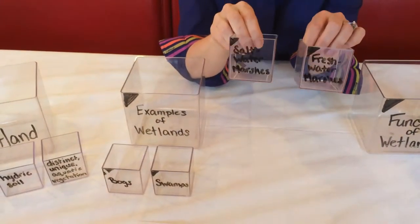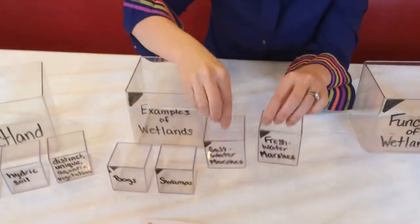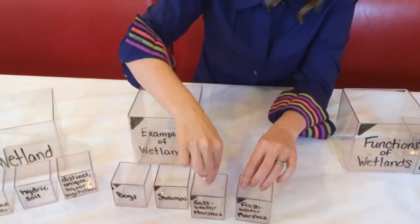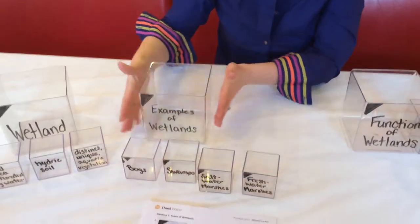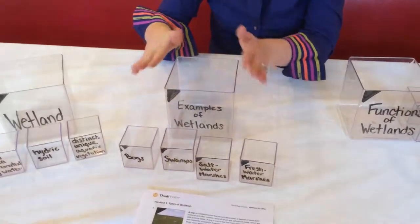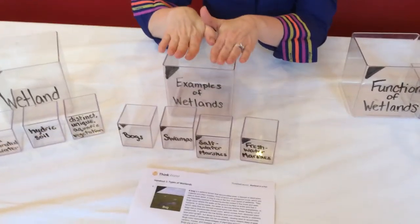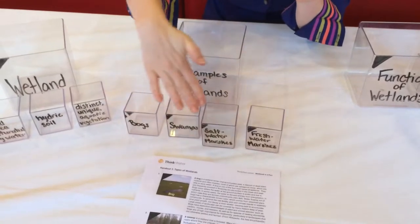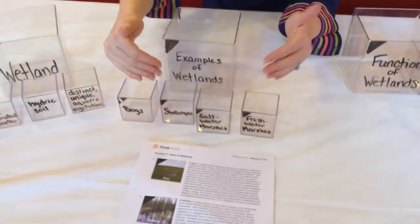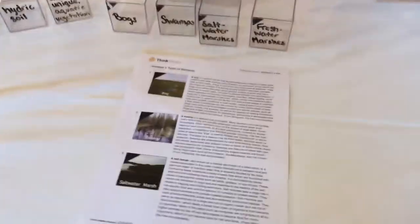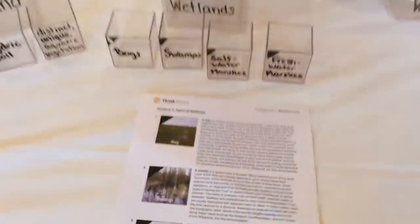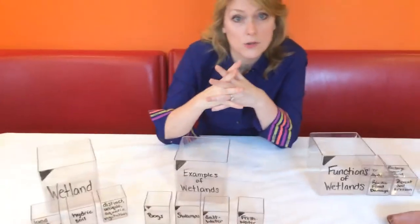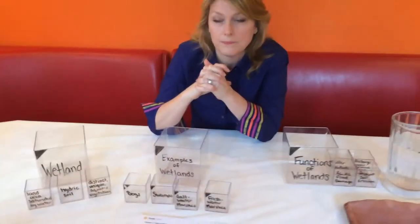They're also going to distinguish between two types of marshes: saltwater and freshwater marshes. Then you remind them that the examples of wetlands we're talking about are these four things, and they also exist in a part-whole structure — that's one of the thinking skills we're going to emphasize in language throughout the lesson.